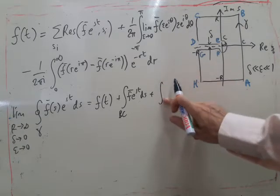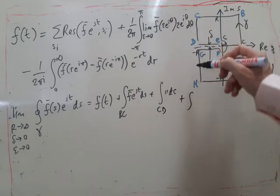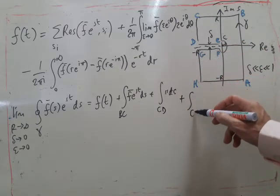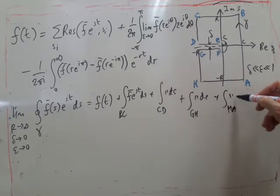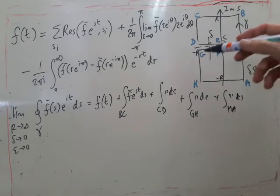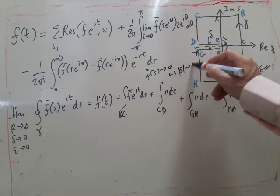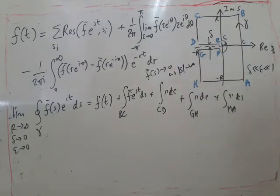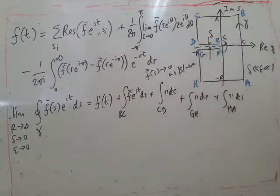So we're assuming as usual that f̄(s) goes to zero as mod s goes to infinity. So in a similar way as we proved before, the integral along here, here, here and here will all go to zero. So all of these will tend to zero as long as this is true.